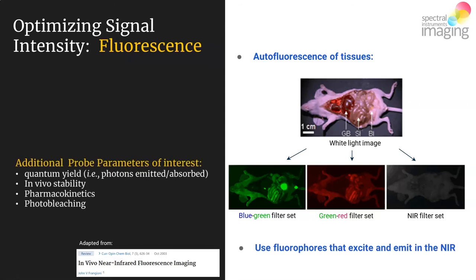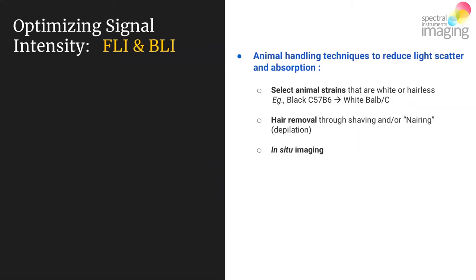Of course, with any probe there are additional parameters of interest — quantum yield, in vivo stability, pharmacokinetics, and photobleaching — all of which need to be optimized. One final way to improve your probe performance beyond selecting the appropriate wavelength is to modify your animal handling techniques.